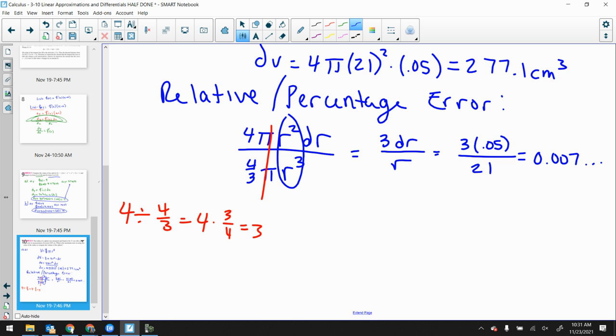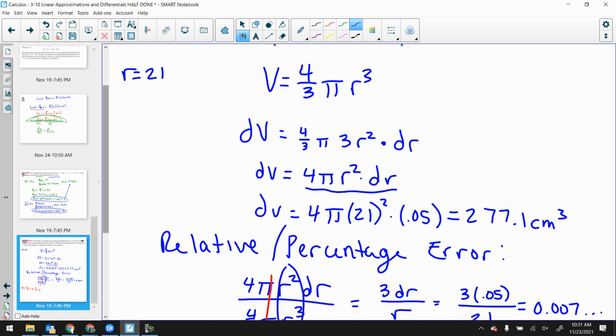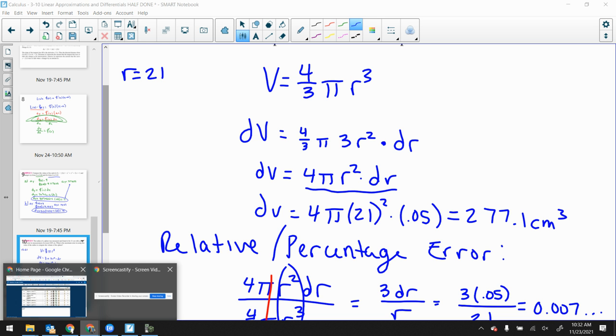And you can actually do problems where you work backward. Maybe you say, I only want a relative error of like 0.1% or something like that. And then you could work backward and say, in the end, how close does my measurement need to be in terms of measuring the radius? What's my error tolerance on my radius so that I get a relative error of 0.1%? It all depends on how close you want this value to actually end up. All right. I've talked for way too long. I'm so sorry.